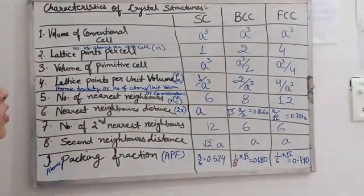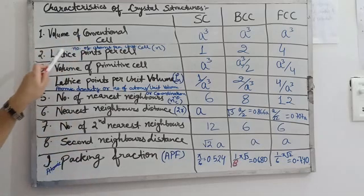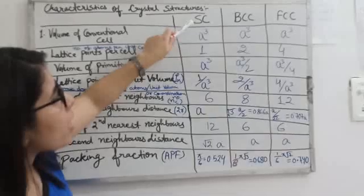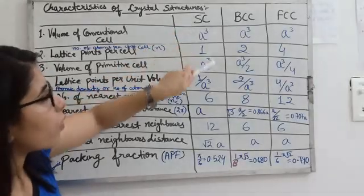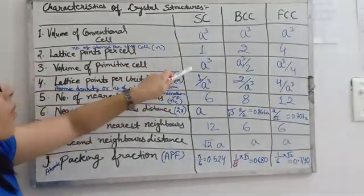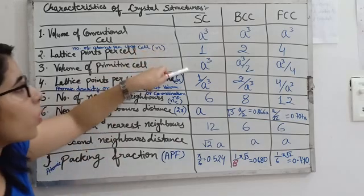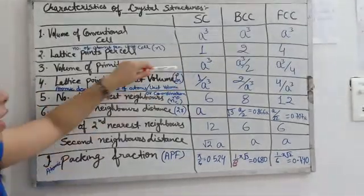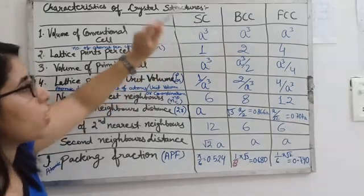If you want to relate these things — the volume of the conventional cell and number of atoms per unit cell — you can see that if you divide the conventional cell volume by the number of atoms per unit cell, you will get the volume of the primitive cell. So you can relate these columns and find this value with the help of the other two values.